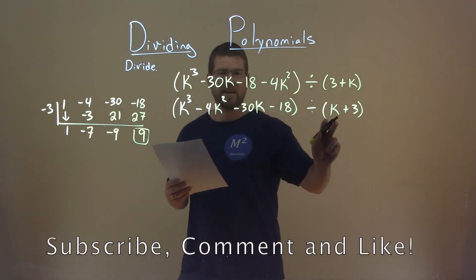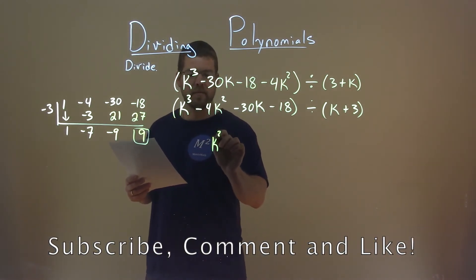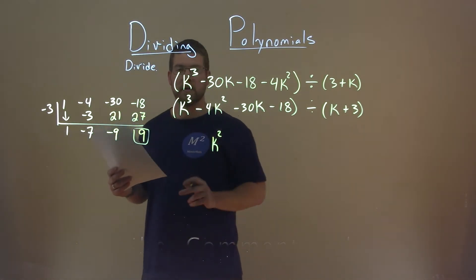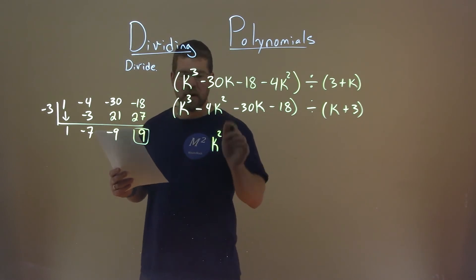k to the third divided by k gives us k squared. This 1 is a coefficient in front of the k squared. Now we go down.